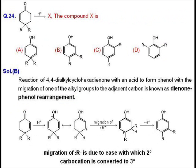Question number 24, in which the given compound is a dienone and when it is subjected to H⁺ ion, that is acidic condition, it undergoes dienone-phenol rearrangement reaction in which the dienone converts into phenol and R group migrates to the final product formed is B.